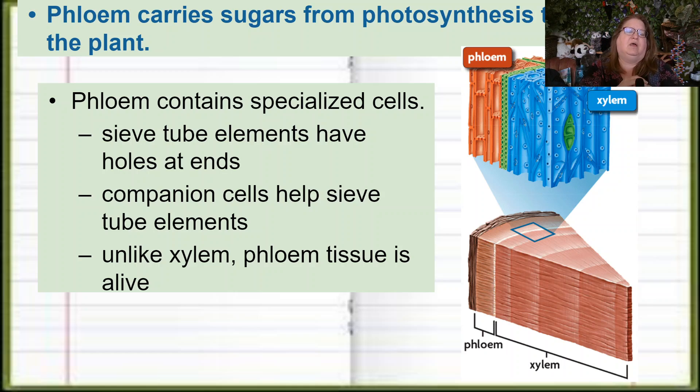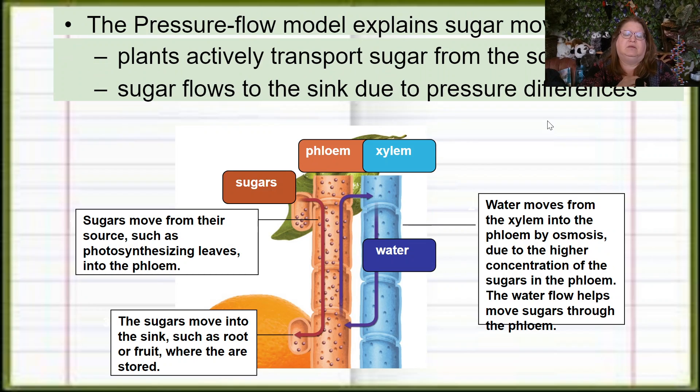The sieve tube elements, again, they're kind of big tubes, and then the companion cells are there to help them out. You can see in the tree the phloem is right underneath the bark, the xylem would be inside the tree making the rings. We'll talk about that when we get to the growth of the tree.